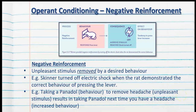Negative reinforcement involves an unpleasant stimulus being removed by continuing a desired behavior. For example, Skinner turned off the electric shock when the rat demonstrated the correct behavior of pressing the lever. The easy way to think of negative reinforcement is that we must continue to do a desired behavior in order for something unpleasant to be removed. A very good example is taking a painkiller to remove a headache — by doing so, you reinforce the behavior, so the next time you have a headache, you take a painkiller to remove the unpleasant stimulus. You must continue this behavior to avoid the unpleasant stimuli.